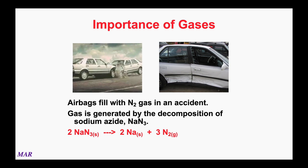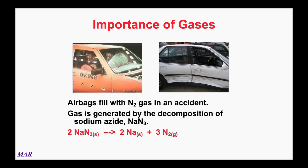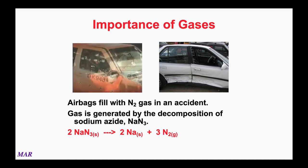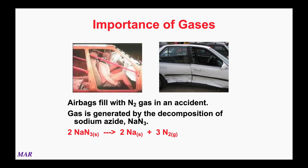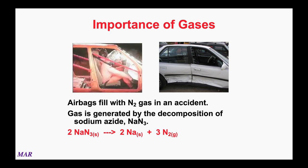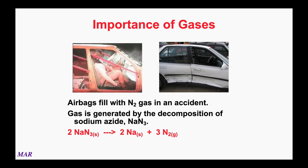In a collision involving a car equipped with airbags, the impact initiates a chemical reaction. Automobile airbags work when a sample of sodium azide detonates, producing nitrogen gas that fills the bag. Using our understanding of the gas laws, we can calculate the quantity of sodium azide required to produce the appropriate amount of nitrogen gas. To make an airbag function, you must understand how gases work.